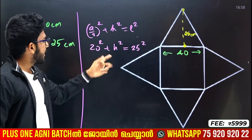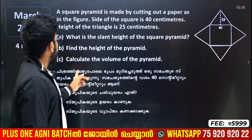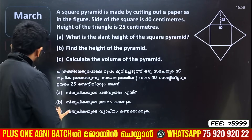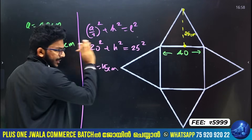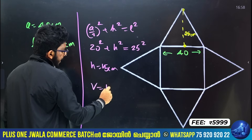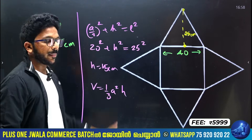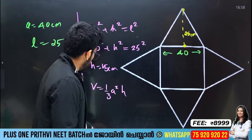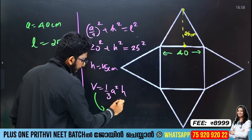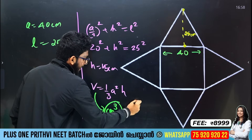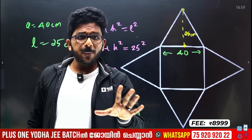The formula is (a/2)² + h² = l². So (20)² + h² = 25². Solving, h = 15. Calculate the volume: V = 1/3 × A² × H = 1/3 × 40² × 15. The volume unit is centimeter cube. We have a square pyramid solved.